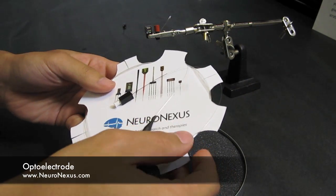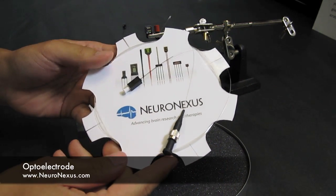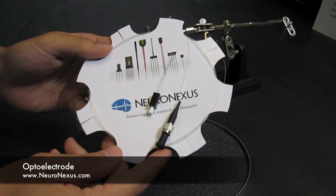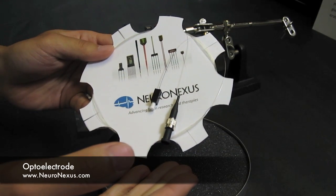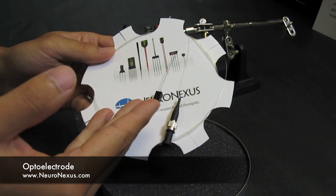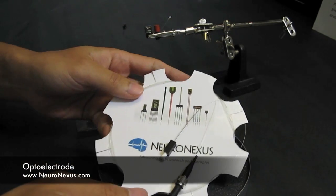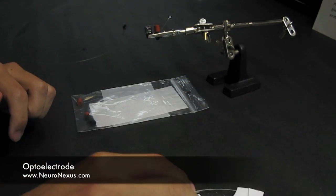This third product is the patch cord that we sell to mate with chronic optoelectrode. This particular one has an SMA connector and our custom coupler. Notice that each component comes with a cap.